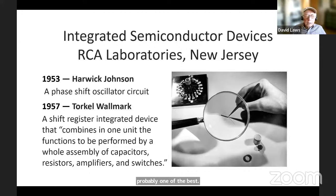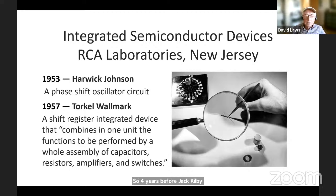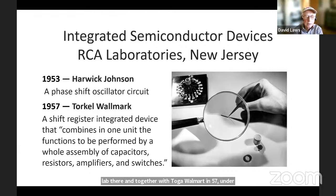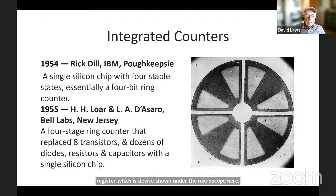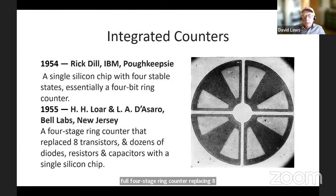Many scientists throughout the world started working to bring this idea to fruition. As early as 1953, Harwick Johnson at RCA Labs in New Jersey actually built a phase shift oscillator circuit on a single piece of germanium — four years before Jack Kilby. He continued work and together with Tolko Walmark in 1957, under a contract with the US Air Force, they built a series of fully integrated circuits including a shift register. More than RCA, there was work going on at IBM, where Rick Dill built a single-chip four-stage counter in 1954. A similar device came out of Bell Labs in 1955 — a full four-stage ring counter replacing eight transistors and dozens of other devices.